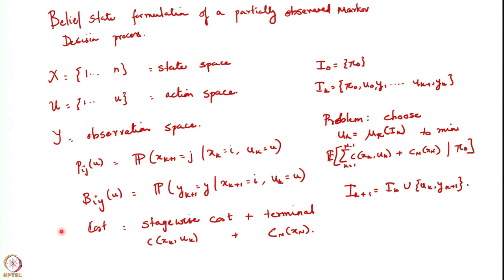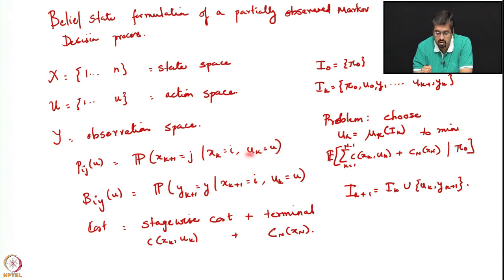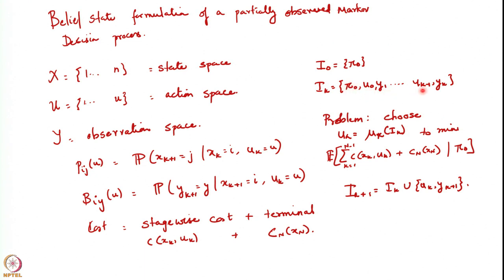In order to argue this, we wrote out a formulation for a POMDP — a partially observed Markov decision process. This was a model where the state of the system evolves on a finite set 1 to n, actions were from a finite set 1 to u, and we had an observation space. The state evolved according to a controlled Markov chain with this probability kernel, and observations were based on a probability kernel depending on the state and the control applied at the previous time step. We had a stagewise cost, and the problem was to choose actions as a function of the information at each time step.